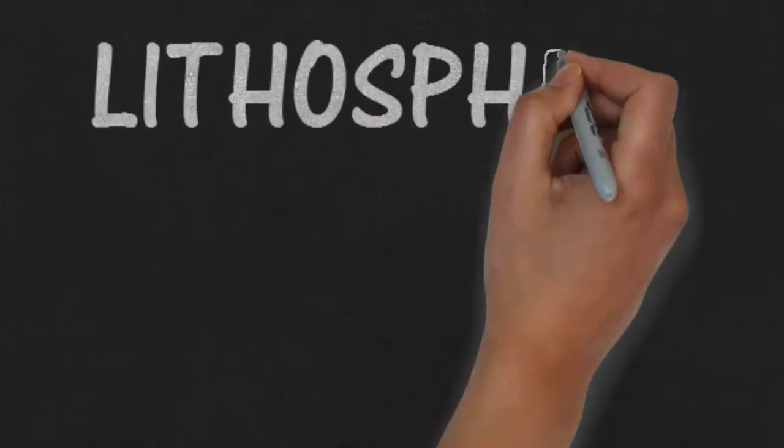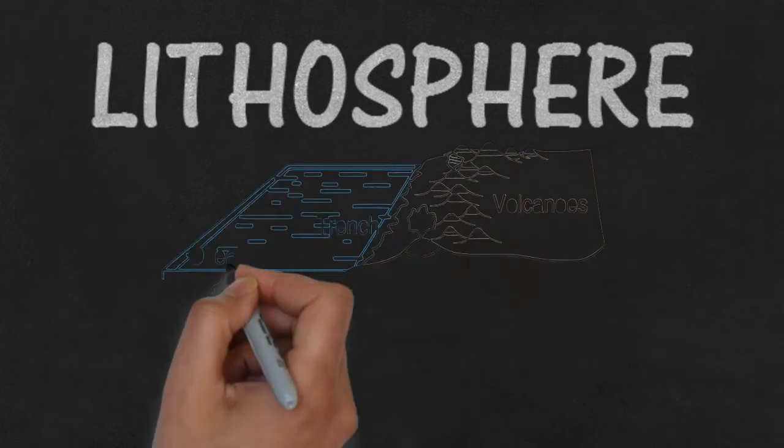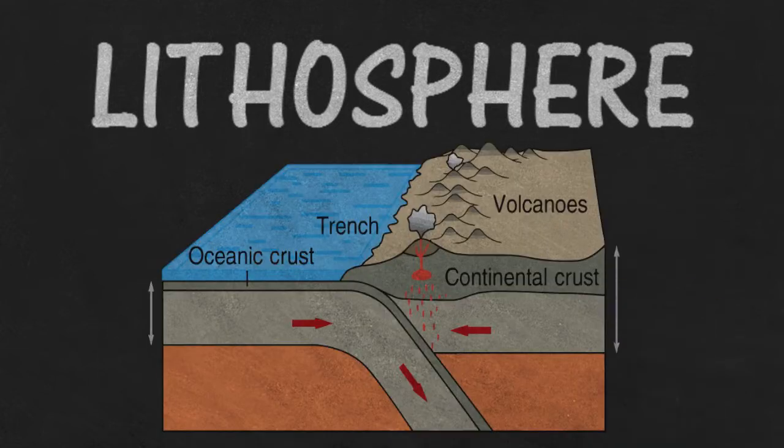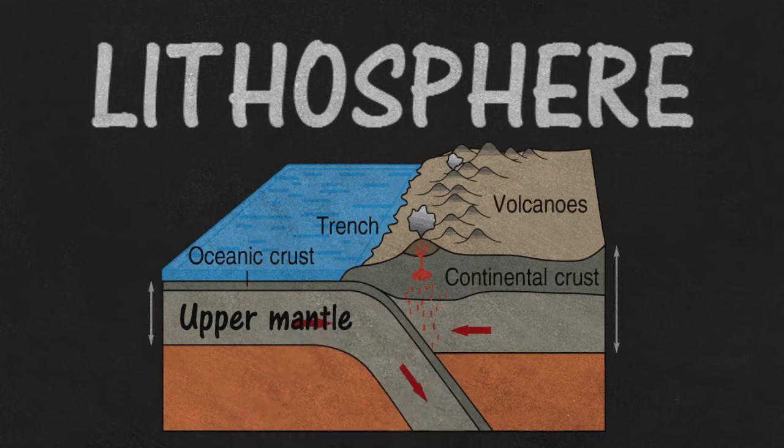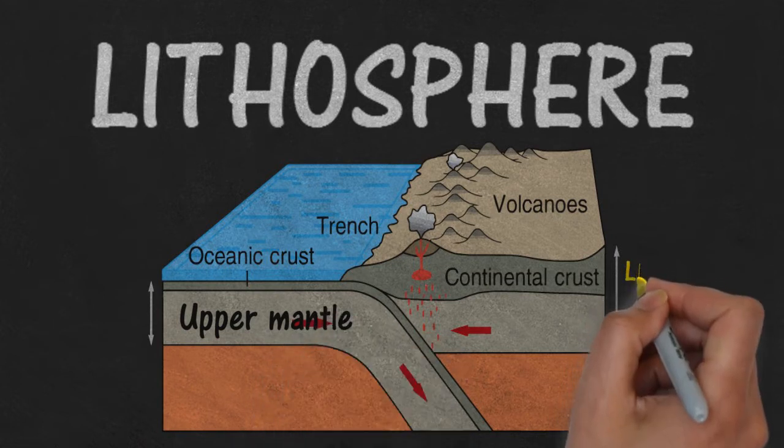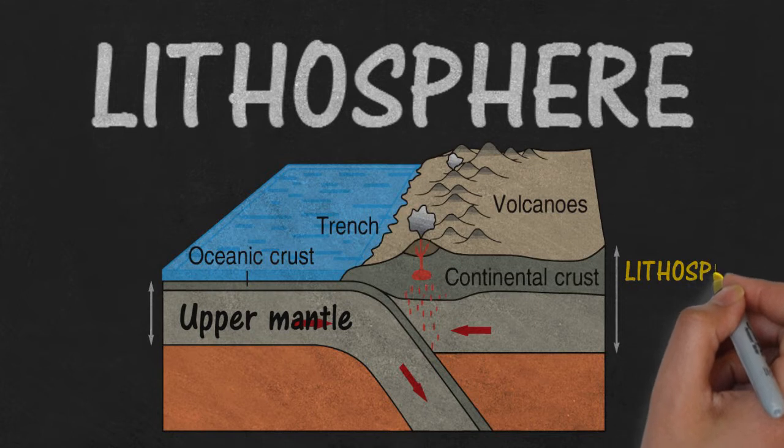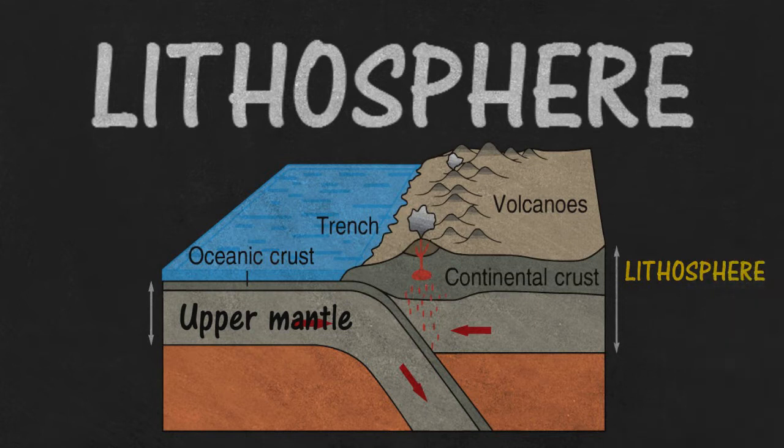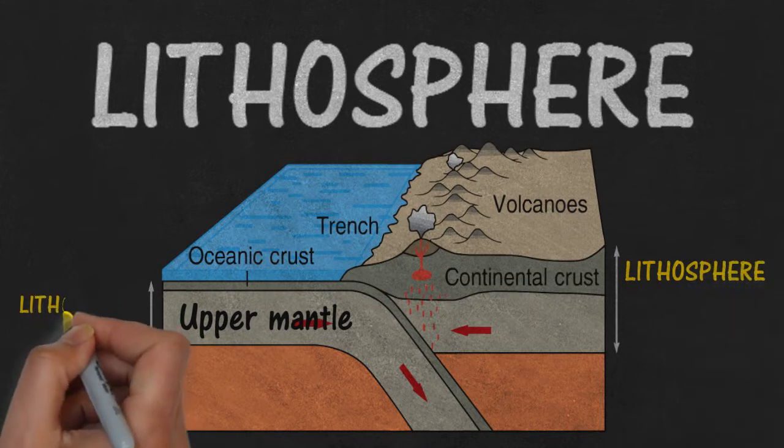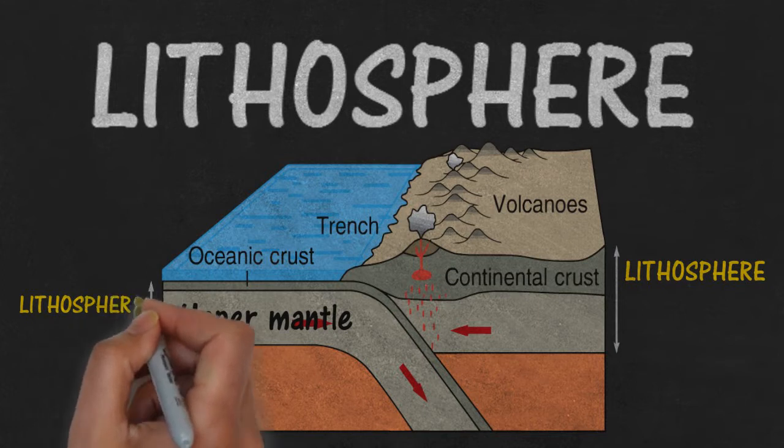Now, more about the lithosphere. The lithosphere is a combination of the Earth's crust and the upper mantle, which is another layer just underneath it. It's important to remember that the Earth's crust is not just the part that we walk, drive, and basically live on, but it also includes the ocean floor.